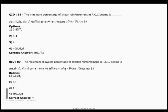Question 89: The maximum allowable percentage of tension reinforcement in an RCC beam is four percent. Tension reinforcement must not exceed 4%. Note: the previous question was about shear reinforcement; this one is about tension reinforcement.